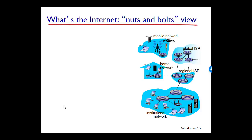The Internet is a computer network that interconnects hundreds of millions of computing devices throughout the world. Not too long ago, these computing devices were mainly traditional desktop PCs and Linux workstations and servers that store and transmit information such as web pages and email messages. Increasingly, non-traditional end systems such as laptops, smartphones, tablets, TV gaming consoles, webcams, cars, environmental sensing devices, even picture frames, and some home electrical and security systems are all being connected to the Internet. Indeed, the term 'computer network' is beginning to sound a little old, given the many non-traditional devices being hooked to the Internet.